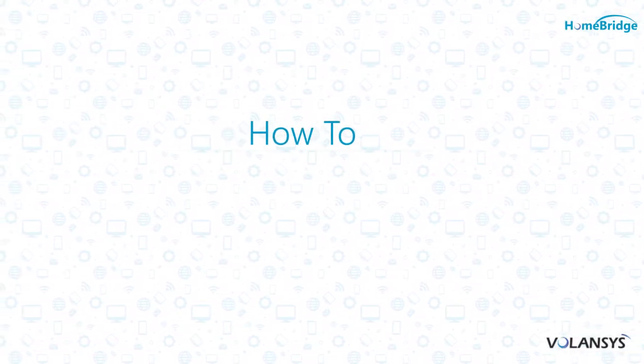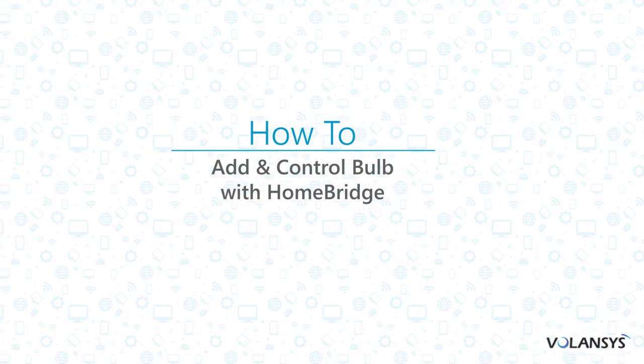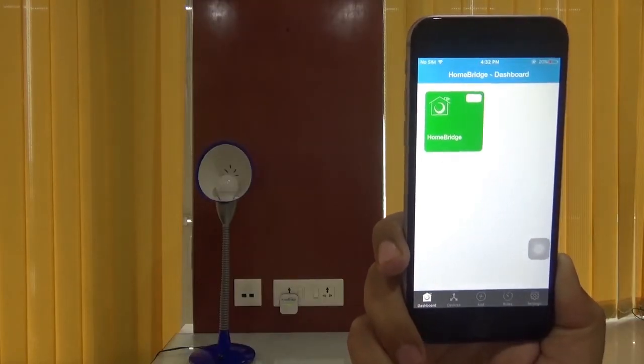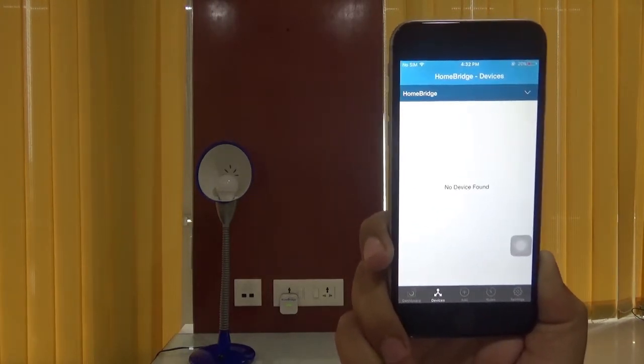Now we will see how to add and control a light bulb to perform events using home bridge. Make sure that home bridge is connected to the local network. You can check this by ensuring that home bridge has a green light powered on it. You can see the home bridge is added here.